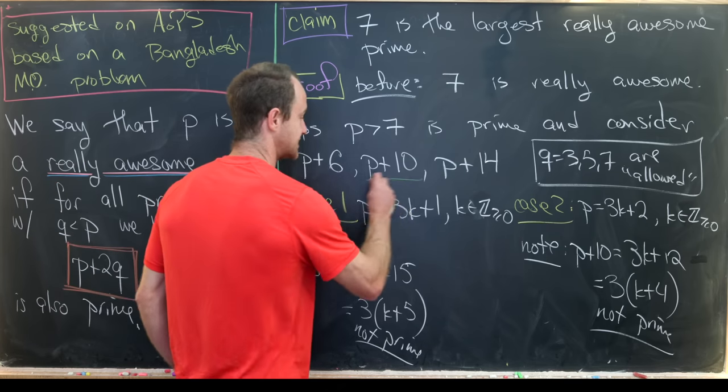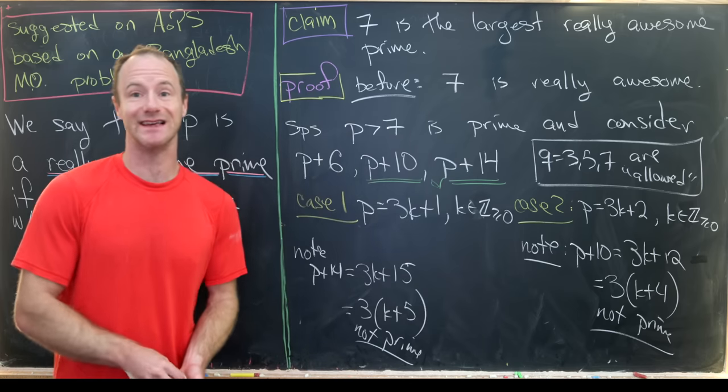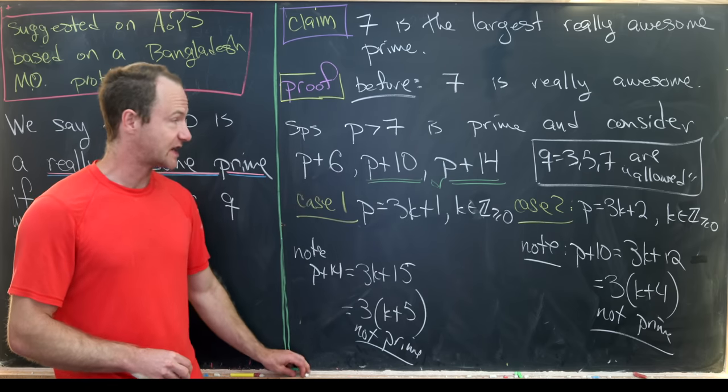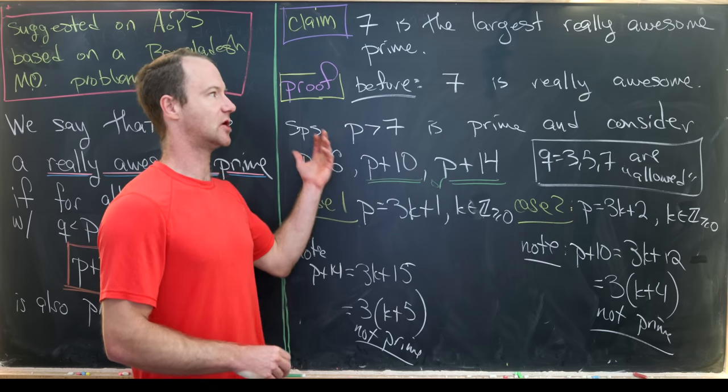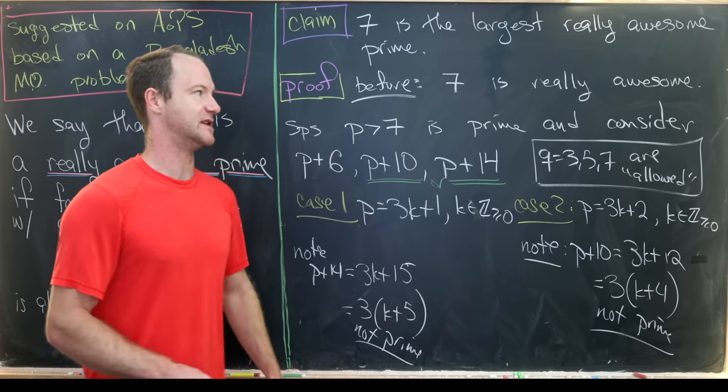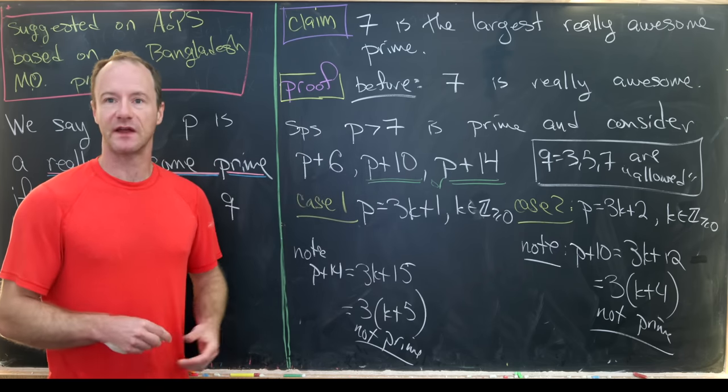So if we've got a prime larger than 7, then either this guy is not prime or p plus 14 is not prime, which tells us that our prime is not awesome, which tells us the largest possible awesome prime is 7. And we checked that that was really awesome. And that's a good place to stop.